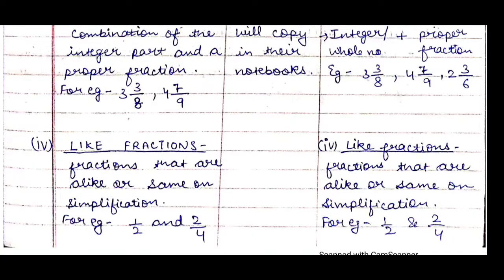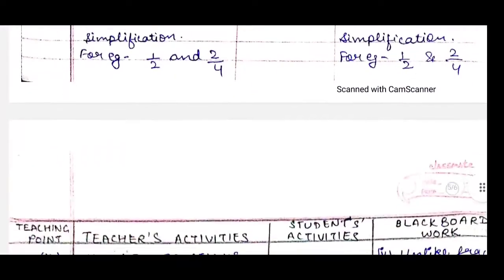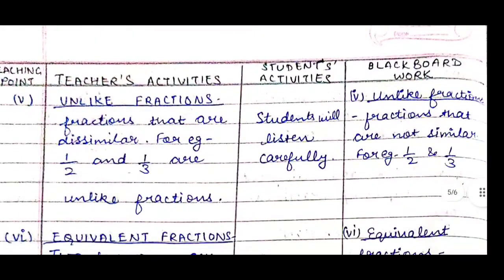Next comes like fractions — fractions that are alike or same on simplification. For example, 1/2 and 2/4: when we simplify 2/4 it comes out to be 1/2, so both are the same, which is why they are like fractions. We write on the board: like fractions — fractions that are alike or same on simplification. Example: 1/2 and 2/4.